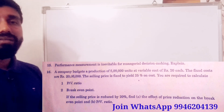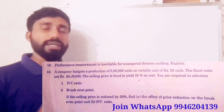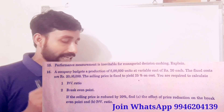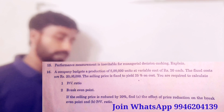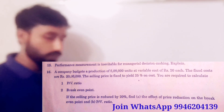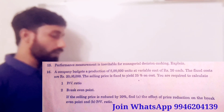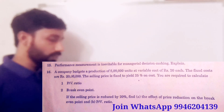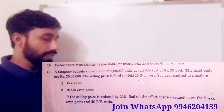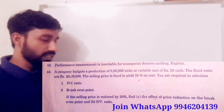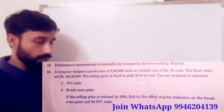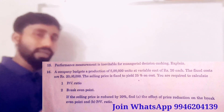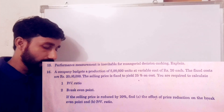The subject of Marginal Costing: production is 5 lakh units at a variable cost of Rs 20. The fixed costs are Rs 20 lakhs. The selling price is fixed to yield 25% on cost. You are required to calculate: first, the PV ratio.